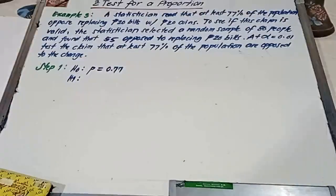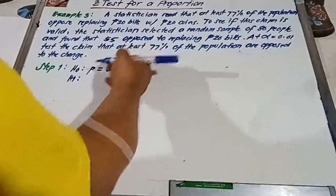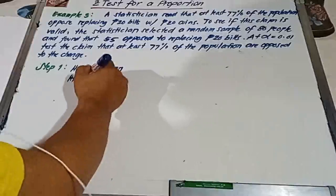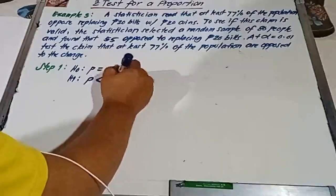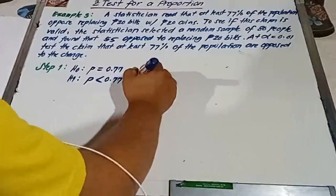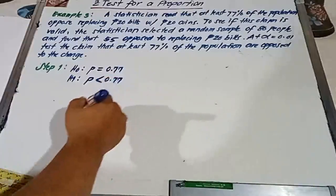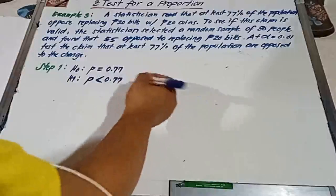And our alternative hypothesis, it's not equal to 0.77, but it is less than 77%. Therefore, our population proportion is less than 0.77, and this is the claim of that article read by our statistician.